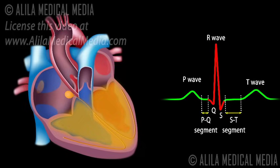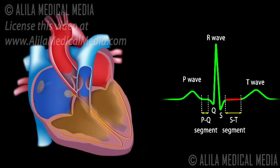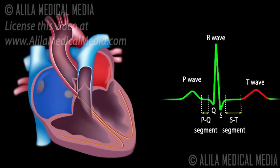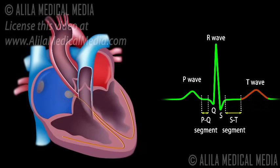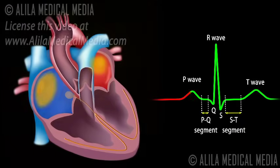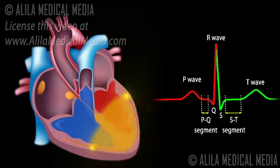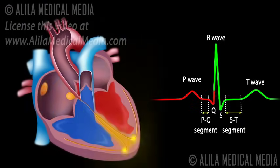The ST segment reflects the plateau in the myocardial action potential. This is when the ventricles contract and pump blood. The T wave represents ventricular repolarization immediately before ventricular relaxation, or ventricular diastole. The cycle repeats itself with every heartbeat.